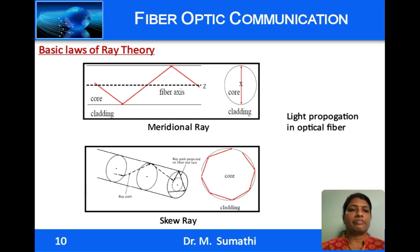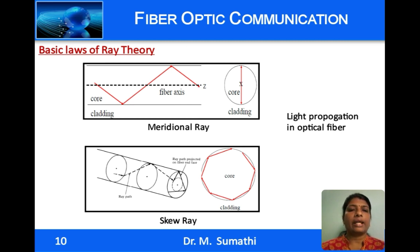Considering light propagation in an optical fiber, which is cylindrical in nature, there are two kinds of rays: meridional rays and skew rays. Meridional rays pass through the axis of the fiber after every reflection, lie in a single plane, and energy is concentrated at the center. A skew ray does not lie in a single plane — it follows a helical path and energy is concentrated towards the outer boundary, causing energy to leak into the cladding and resulting in energy loss due to mode coupling. The main rays that propagate in an optical fiber are meridional rays.